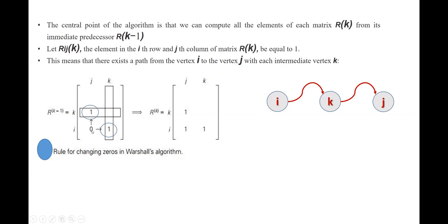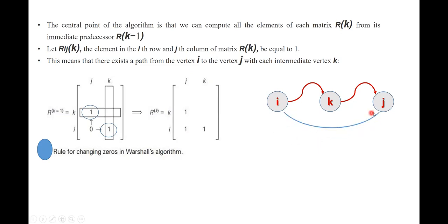In the previous matrix, if there is a path from i to k and k to j, then we can mark i to j as 1. This is the law of transitivity. For example, here i to j is 0 — but we can make it 1 if i to k is 1 and k to j is 1. There is a path from i to k and a path from k to j, so we can say there is a path from i to j.